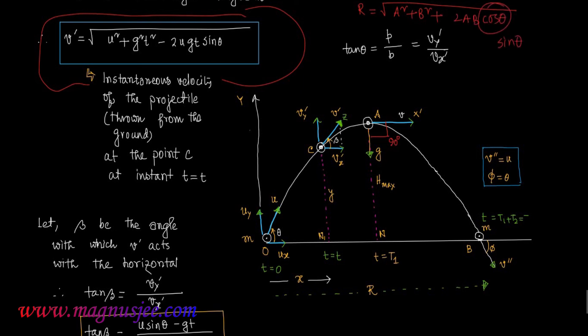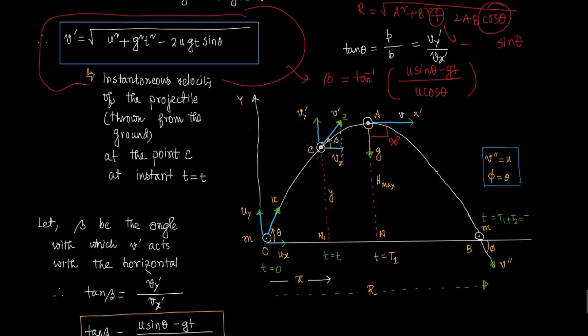For vector addition the formula used cosine theta: R equals the square root of a squared plus b squared plus 2ab cos theta. But for instantaneous velocity of a projectile it uses sine theta. This instantaneous velocity v prime makes an angle beta with the horizontal, and beta equals tan inverse of (u sin theta minus gt) divided by (u cos theta).